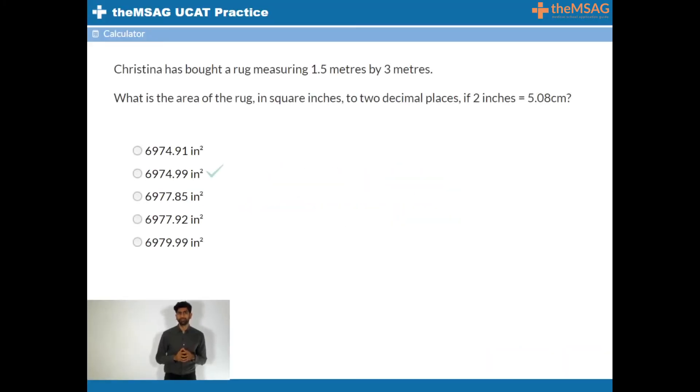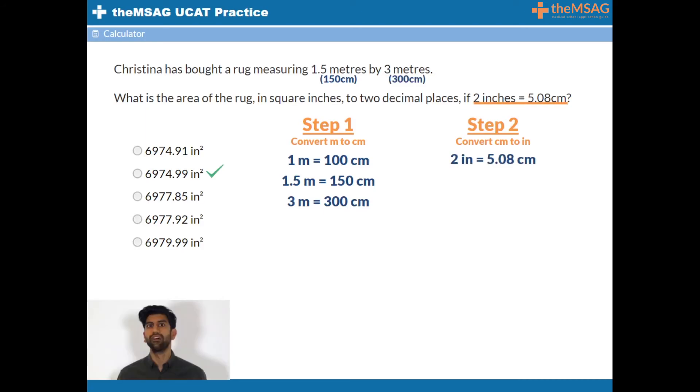Question 3. The answer is B. First we must convert meters to centimeters. Later we will convert centimeters to inches. We know that 1 meter equals 100 centimeters. Therefore 1.5 meters equals 150 centimeters and 3 meters equals 300 centimeters. And how do we convert centimeters to inches if we know that 2 inches equals 5.08 centimeters? First simplify the conversion by dividing by 2 on both sides. 2 inches equals 5.08 centimeters. 1 inch equals 2.54 centimeters.